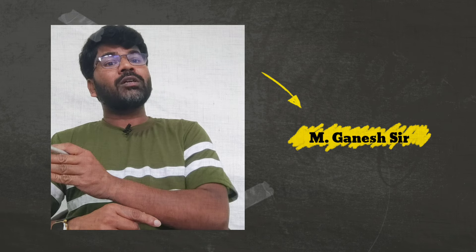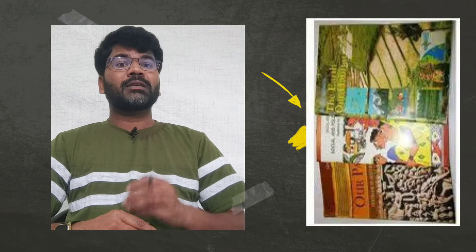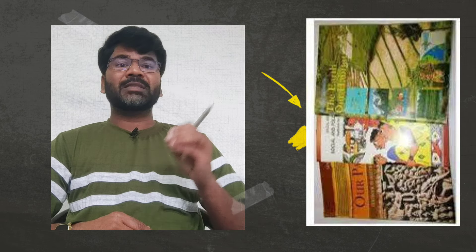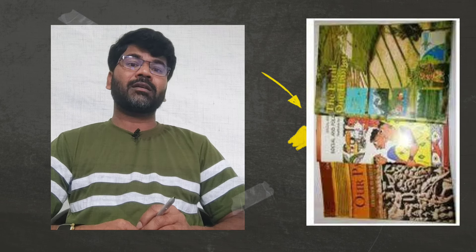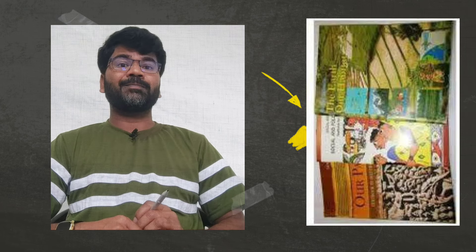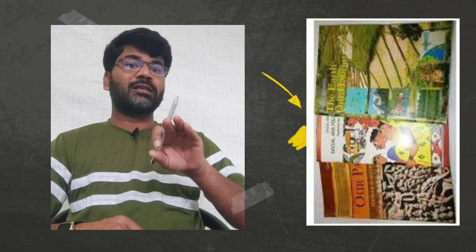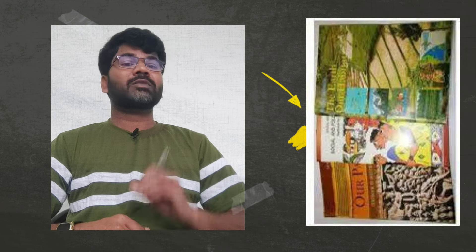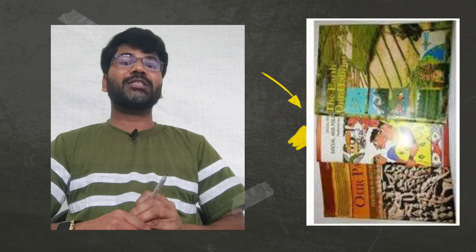Before this, till the last academic session, there were three textbooks for class 6 in Social Science — Geography, History, and Civics. But this year, these three textbooks are deleted. Now, only one textbook has been released.